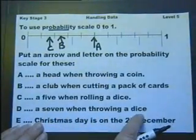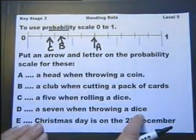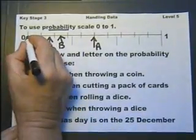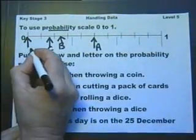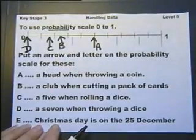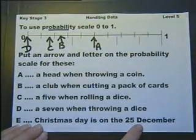A 7 when throwing a dice. Well, that's an impossibility. But we can still show it on the probability scale by indicating the probability of 0.